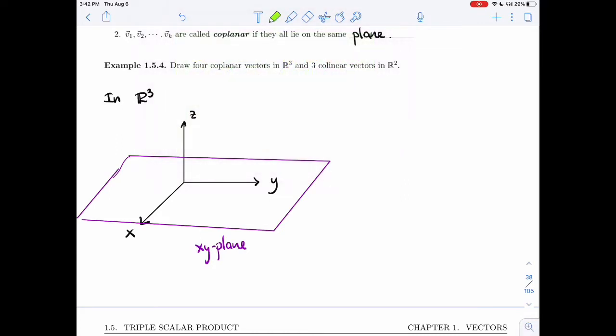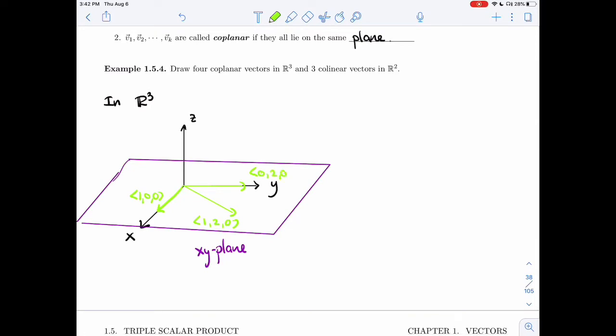And all my vectors will be parallel to them. In fact, I'll just start them all at the origin. So I'm going to take this vector 1, 0, 0. I'm going to take this vector 1, 2, 0. I'm going to take this vector 0, 2, 0. And I'm going to take this vector minus 1, minus 1, 0. So all of these have 0 Z component, and that means they're all on the X, Y plane. So they're all coplanar.